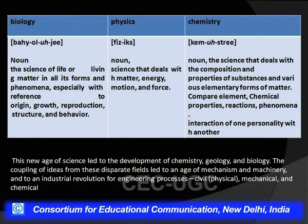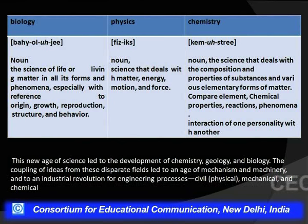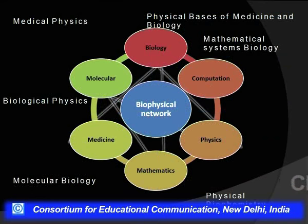This new age science — having streams of chemistry, geology and biology — has given rise to new age mechanisms and machinery and has led to industrial revolution for engineering processes: civil, mechanical and chemical. When we pick up a book on biology we know what it discusses; similarly for vectors in mathematics or chemistry. But when we take up a book for biophysics, not always is the topic clear and not always does it tell you about what components are in it.